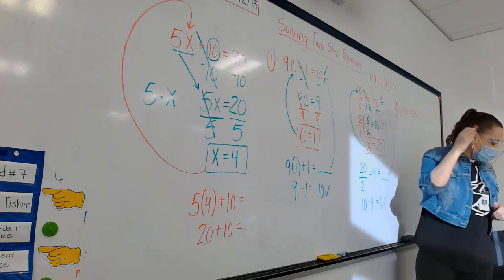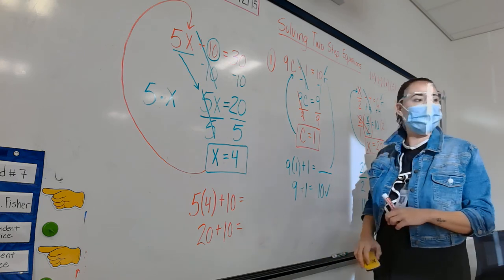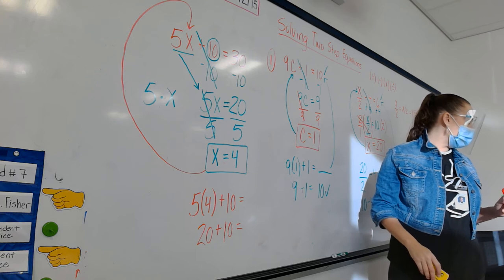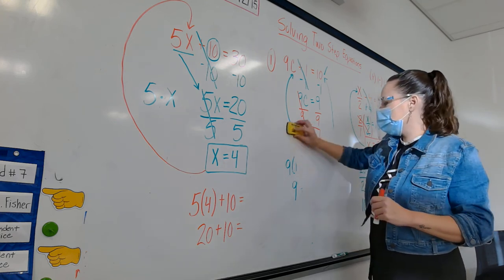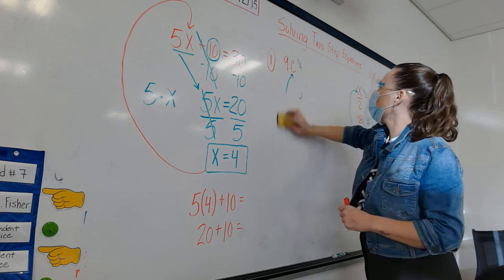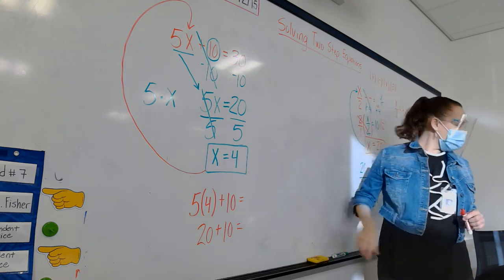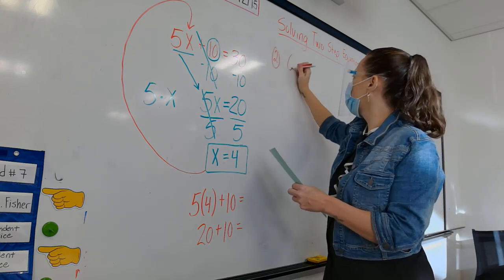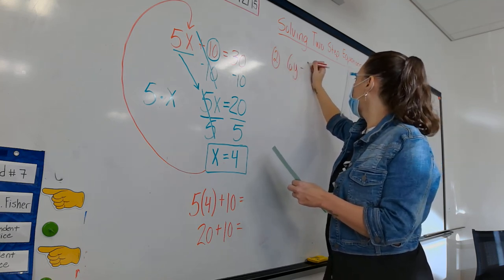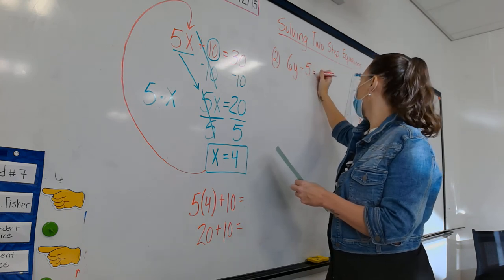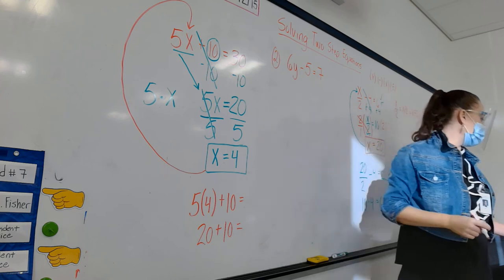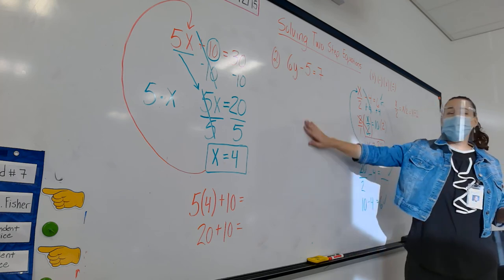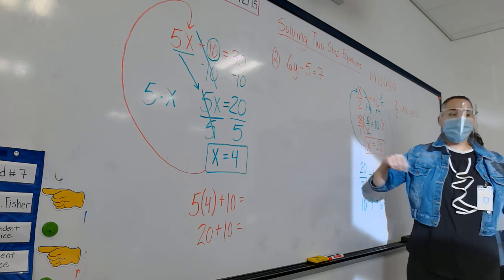I want you to try number 2 by yourself, then grab your whiteboard so you can hold up your final answer for me so I can see how you're doing. If everyone gets the right answer, we won't need to go over it. If I see you struggled, we'll go over number 2 as well.